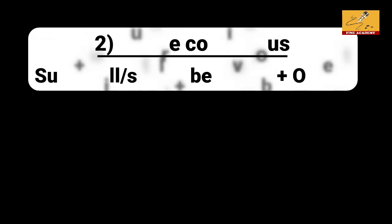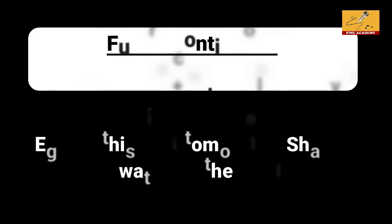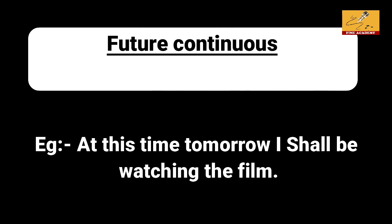Future continuous structure: subject plus will/shall plus be plus verb ing form plus object. For example: 'At this time tomorrow, I shall be watching the film.'